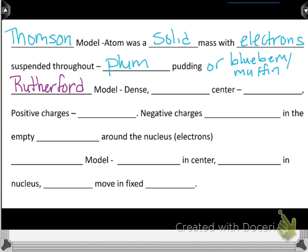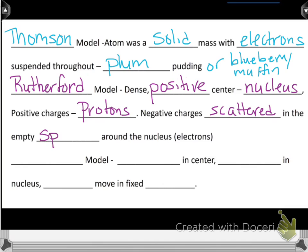And then a little while later, we had Rutherford. And Rutherford's model, he said that they were dense. There was a positive center or a nucleus. The positive charge protons. There was negative charge, or there were negative charges scattered in the empty space around the nucleus. So, the electrons. And as you can see, the more the scientists do research and the more they discover and the more they build on each other's discoveries, the closer they're getting to the real thing.